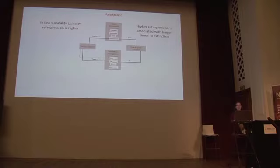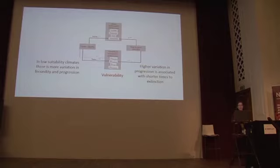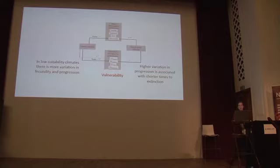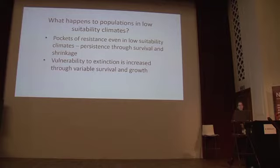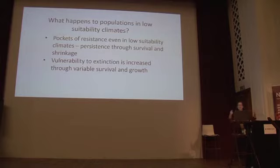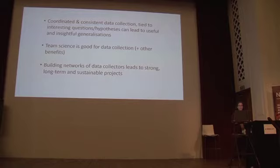Looking more deeply, we find two interesting things. Rather than affecting population growth rate directly, in low suitability climates, shrinkage or retrogression is higher, and high retrogression is associated with longer times to extinction. So this is a method by which some plant species resist low suitability climates. In contrast, there is a vulnerability pathway: in low suitability climates, there's more variation in fecundity and progression, and this higher variation is associated with shorter times to extinction. Both results may lead to management recommendations about how best to support resistance strategies and protect vulnerable populations from climate change impacts.